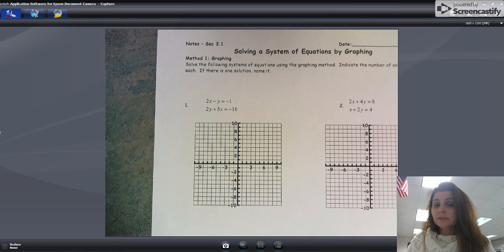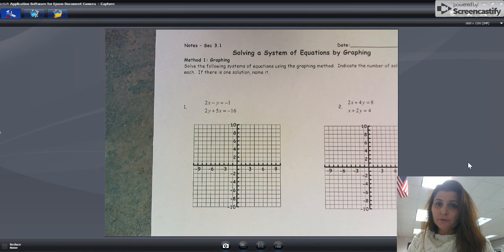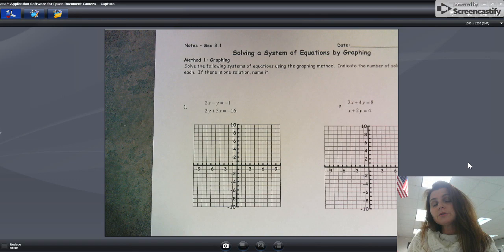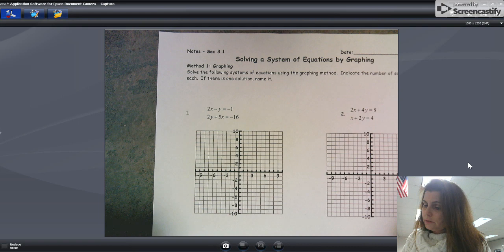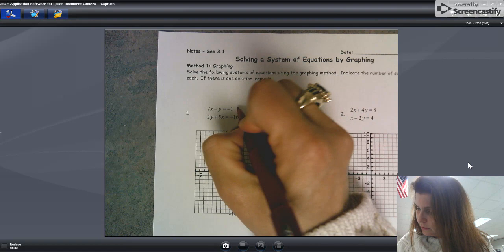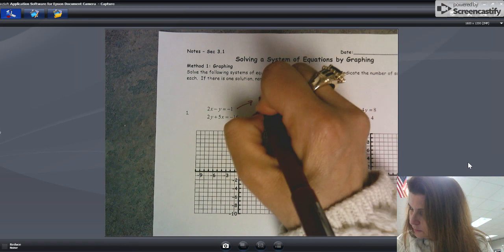First up, solving by graphing. Simply put, we need to graph our lines and see where they intersect. Their intersection point is the solution to the system. Here's our system - two equations, two variables. We need to get these graphed. I don't think they're quite ready to be graphed. I'm going to switch these to slope-intercept form so I can get them graphed easily. That's going to turn into, let's see, I'll subtract 2x from both sides.